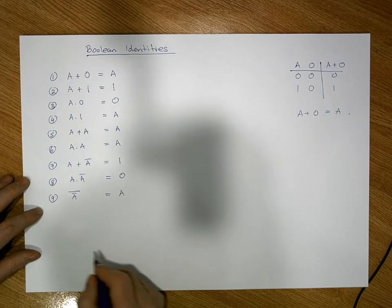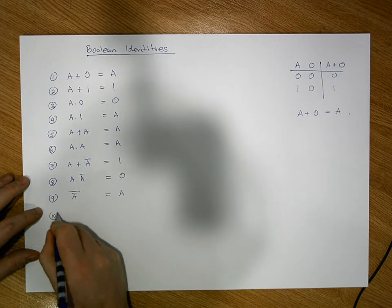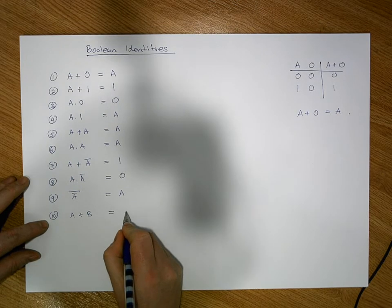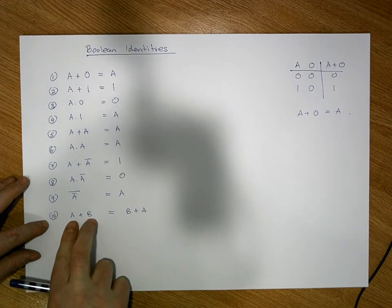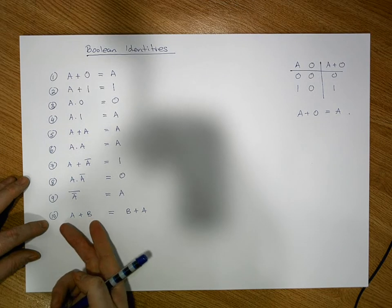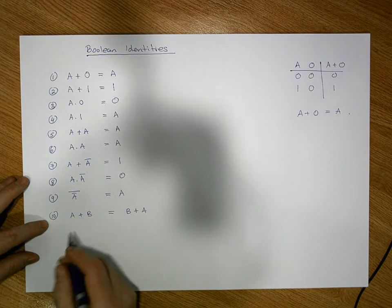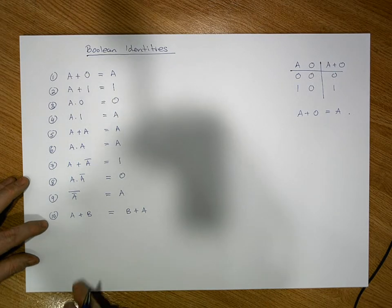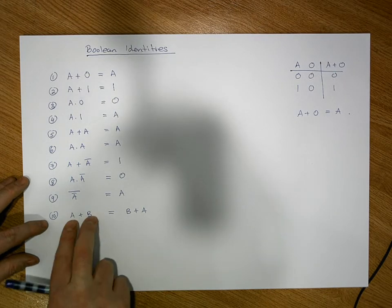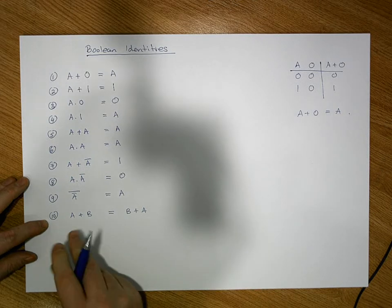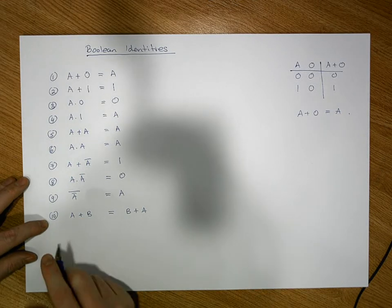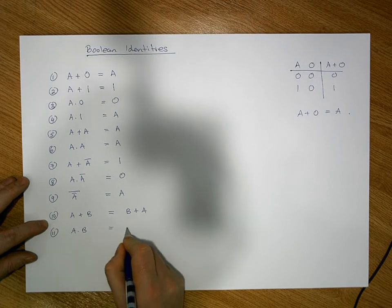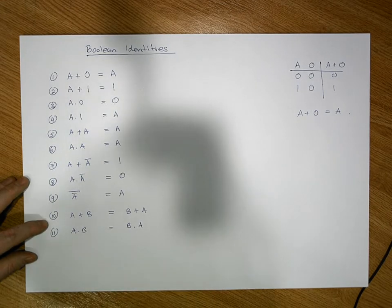Identity ten: A OR B is equivalent to B OR A — the operands have moved position, so we say they've commuted. People who take trains and buses are called commuters because they move from one place to another — similarly here the operands move. Identity eleven is the same commutative law for AND: A AND B is equivalent to B AND A.